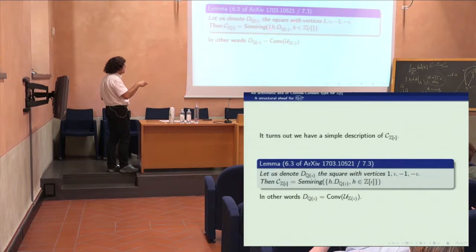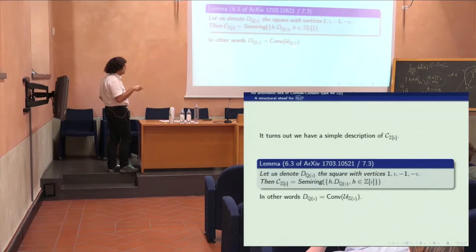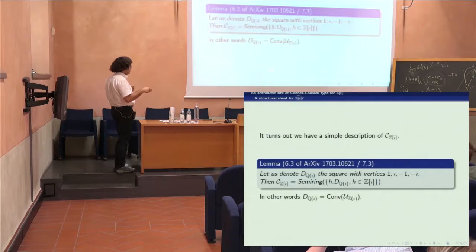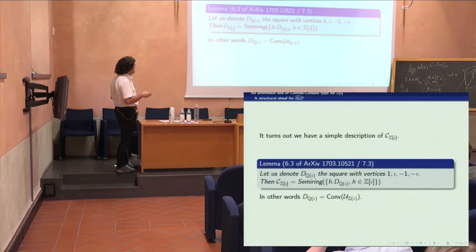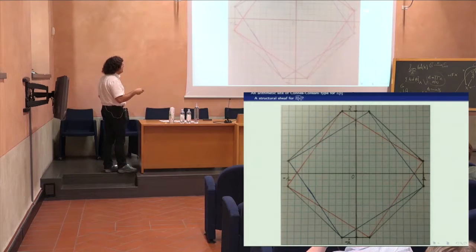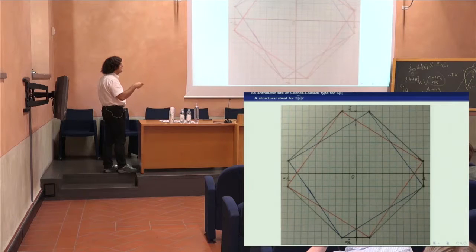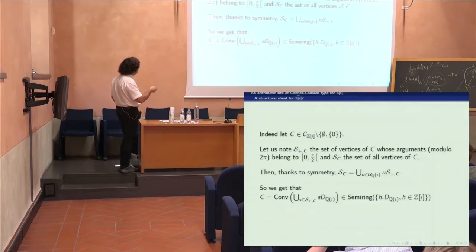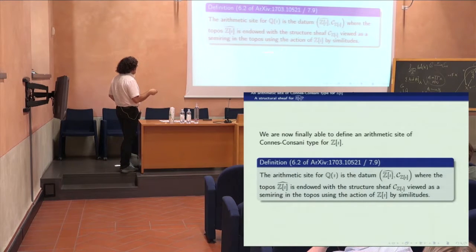Z[i] acts multiplicatively on this semi-ring by direct similitude: a non-zero α in Z[i] sends z to αz. One can show that this semi-ring is generated by the squares — specifically the rotated squares — where the initial square has vertices 1, i, −1, −i. So you take the monoid topos, and the invertible elements of your monoid serve as the basic element of your structural sheaf. You can get every convex polygon with the required symmetries by considering the vertices lying in a quarter-plane.